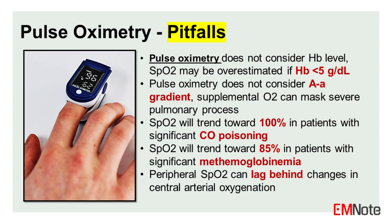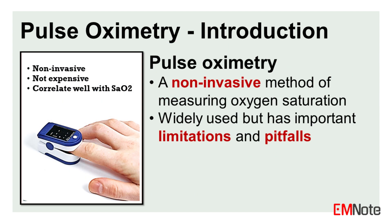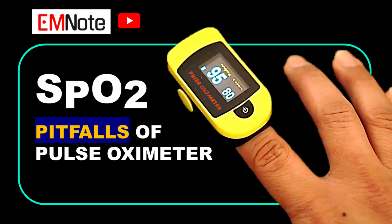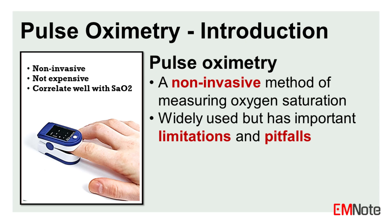In this lecture, we will discuss the pitfalls of using pulse oximetry in assessing patients with dyspnea. Pulse oximetry is a non-invasive method of measuring the oxygen saturation of hemoglobin in arterial blood. It has become a ubiquitous tool in clinical practice, providing a continuous estimate of a patient's oxygenation status. However, there are several important limitations and potential pitfalls associated with its use, particularly in the assessment of patients presenting with dyspnea or respiratory distress.